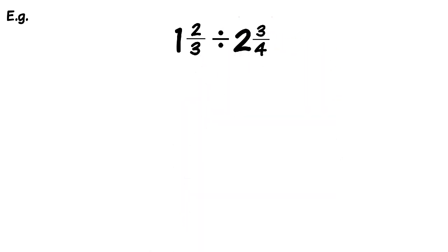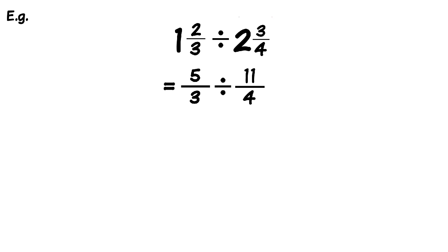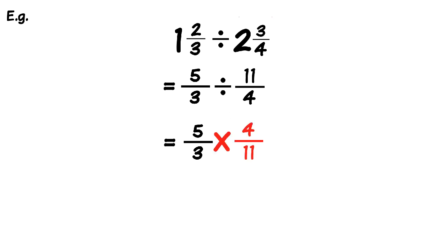Now working with mixed numbers: 1 and 2 thirds divided by 2 and 3 quarters. First, convert these mixed numbers into improper fractions — 1 and 2 thirds becomes 5 over 3, and 2 and 3 quarters becomes 11 over 4. So the question becomes 5 over 3 divided by 11 over 4. Keep the first fraction, flip the second to get 4 over 11, and change the sign to times. Multiplying: 5 times 4 is 20, and 3 times 11 is 33. The new fraction becomes 20 over 33.